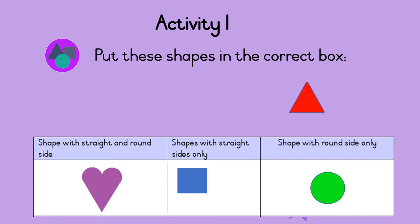Now it's your turn. The triangle has three straight sides. So the triangle should go in the box for shapes with straight sides only. Great!